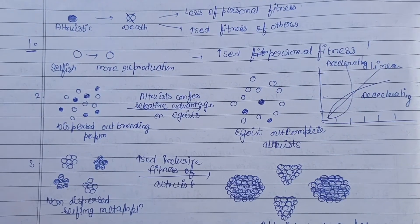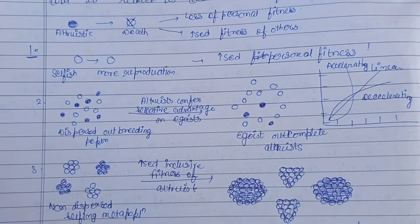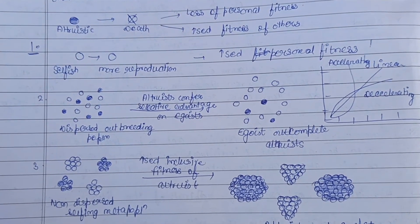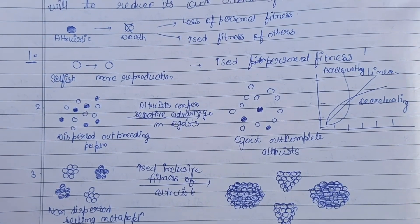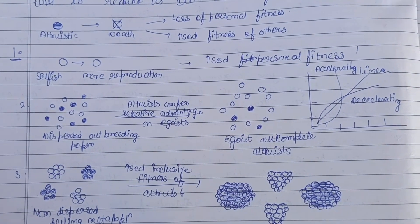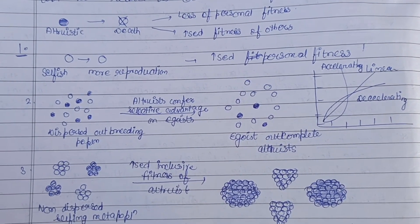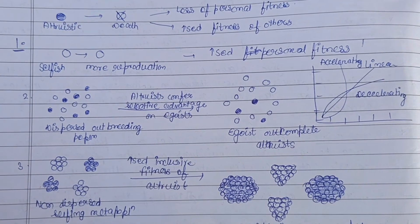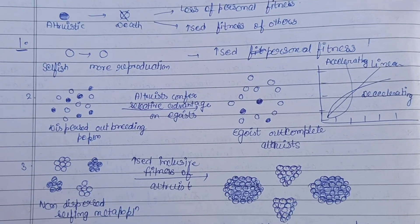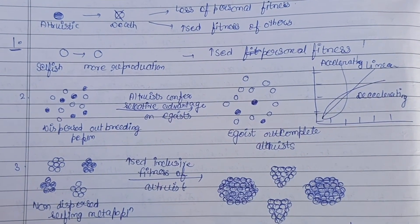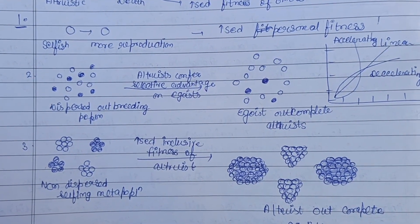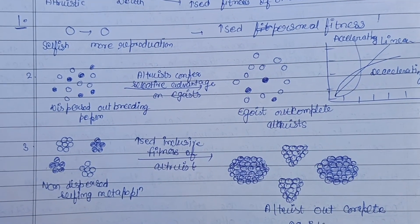There is a diagram representing two conditions. The first is altruistic behavior: shown by an individual, it results in death and a loss of personal fitness, while increasing the fitness of the recipient. The second is egoistic behavior — the opposite of altruistic — where a selfish animal results in more reproduction, personal fitness increases, and death does not occur.